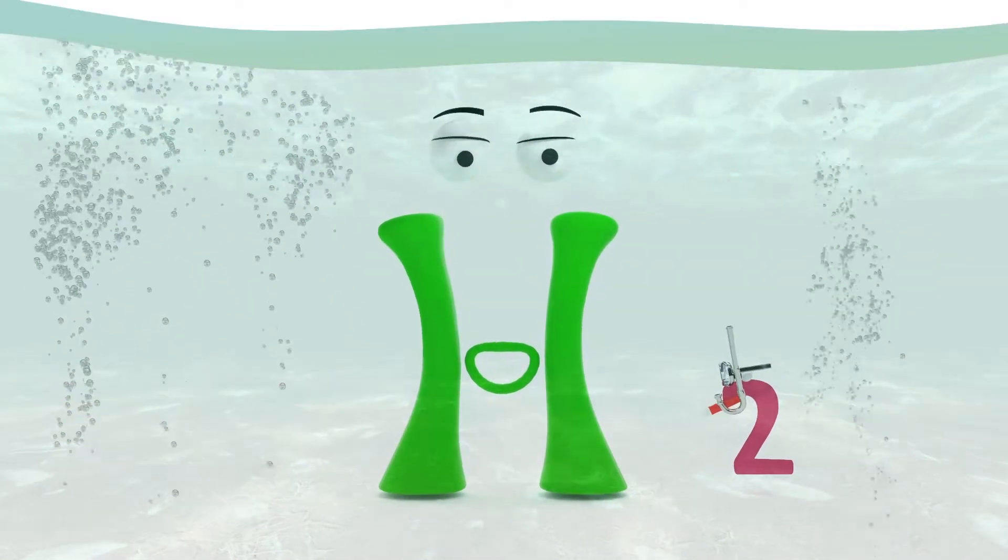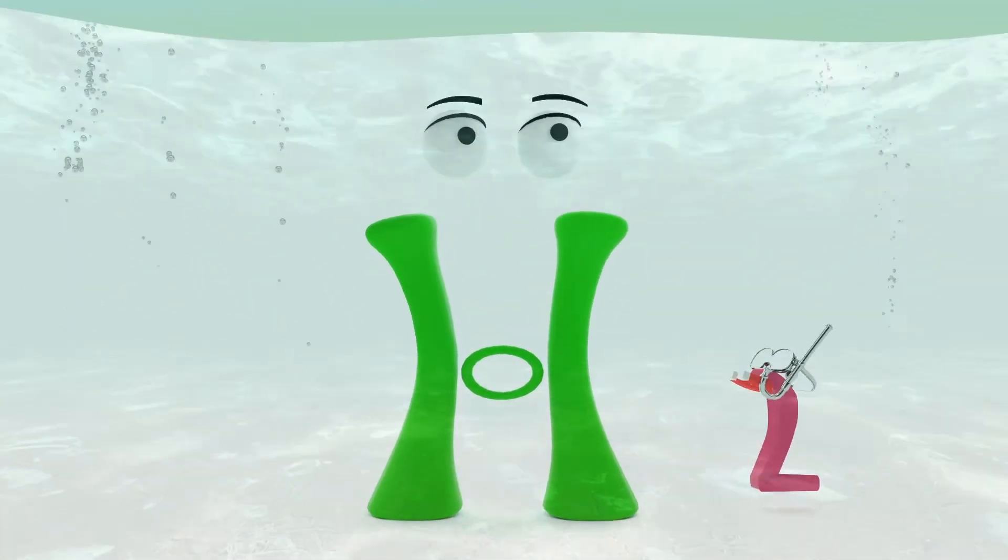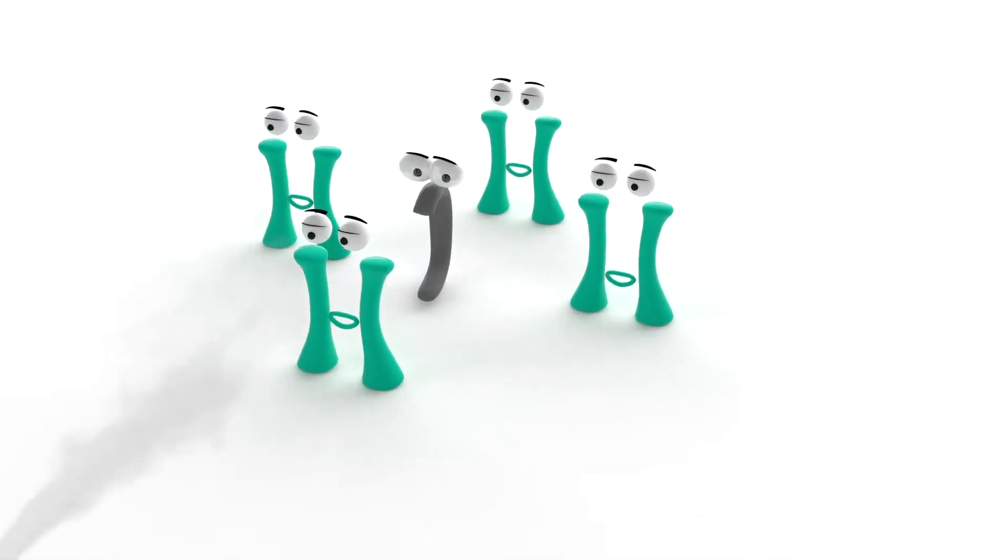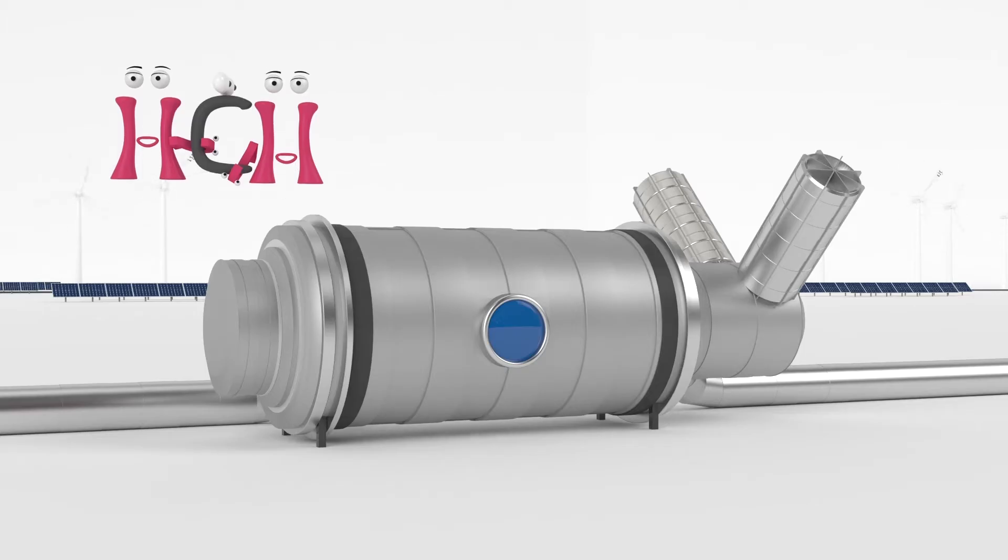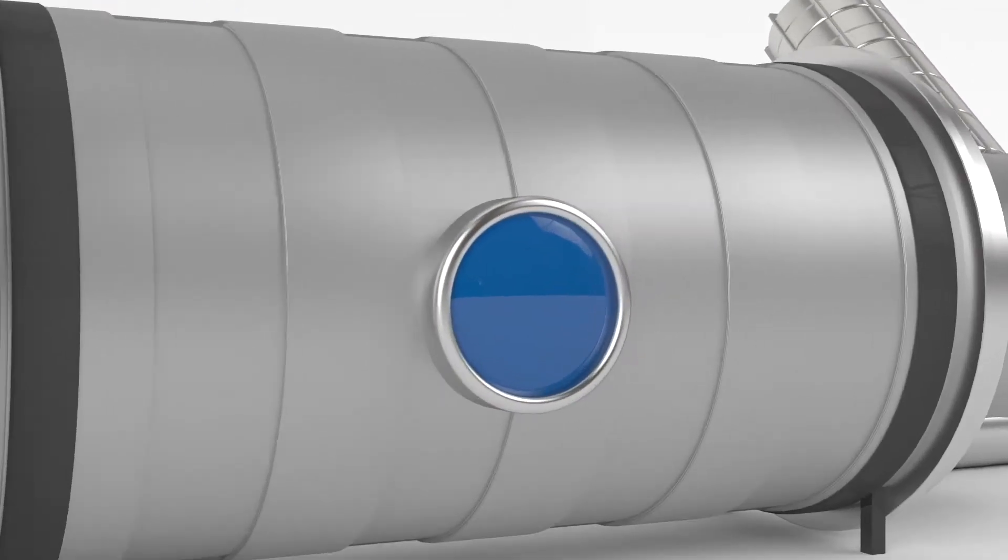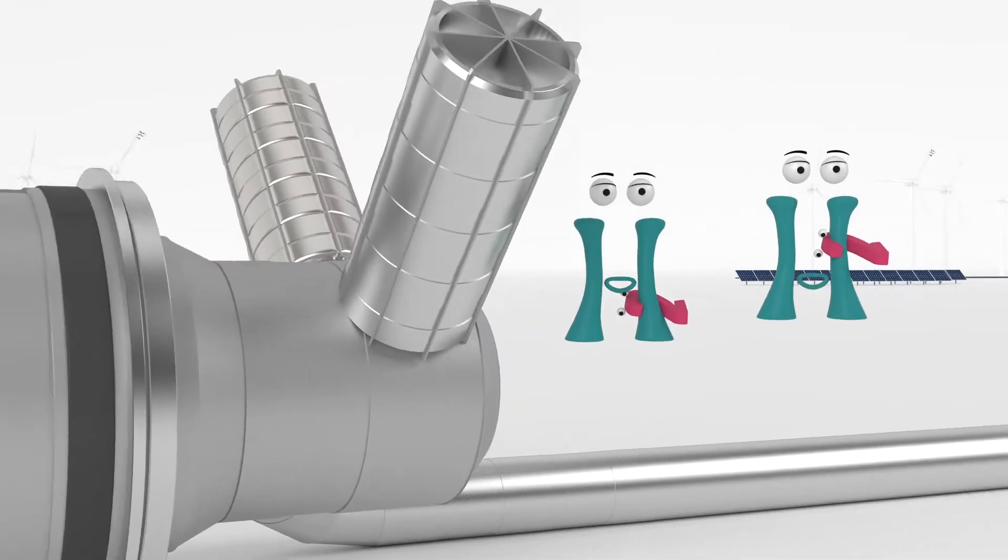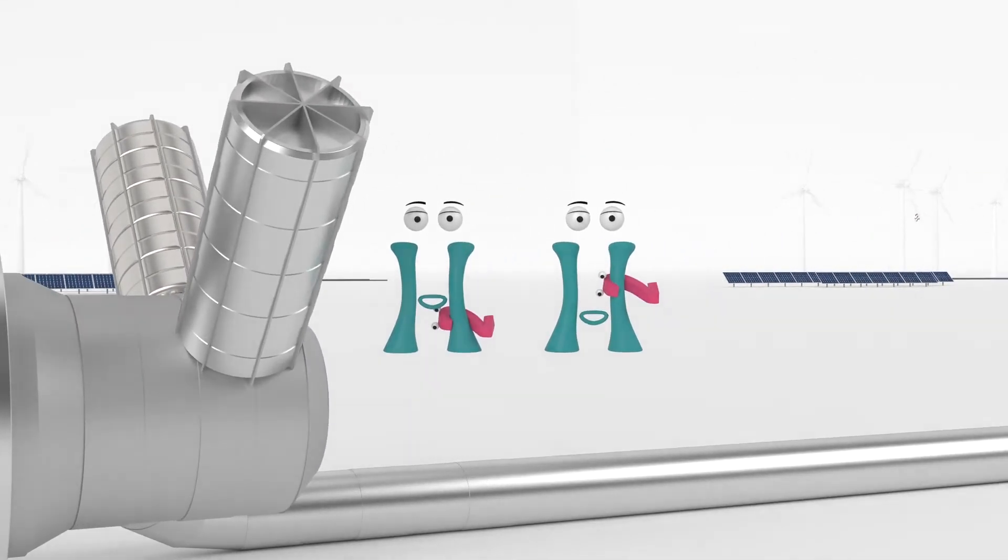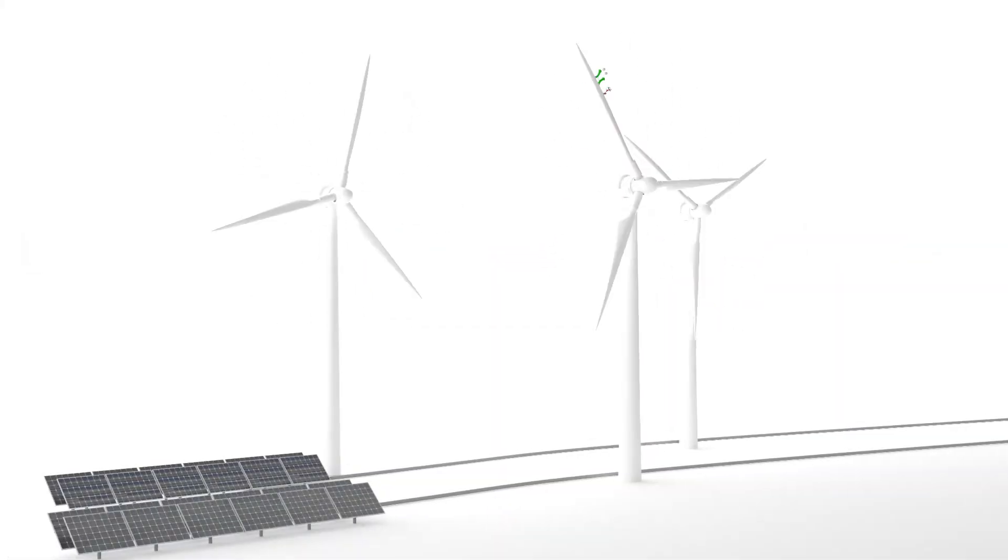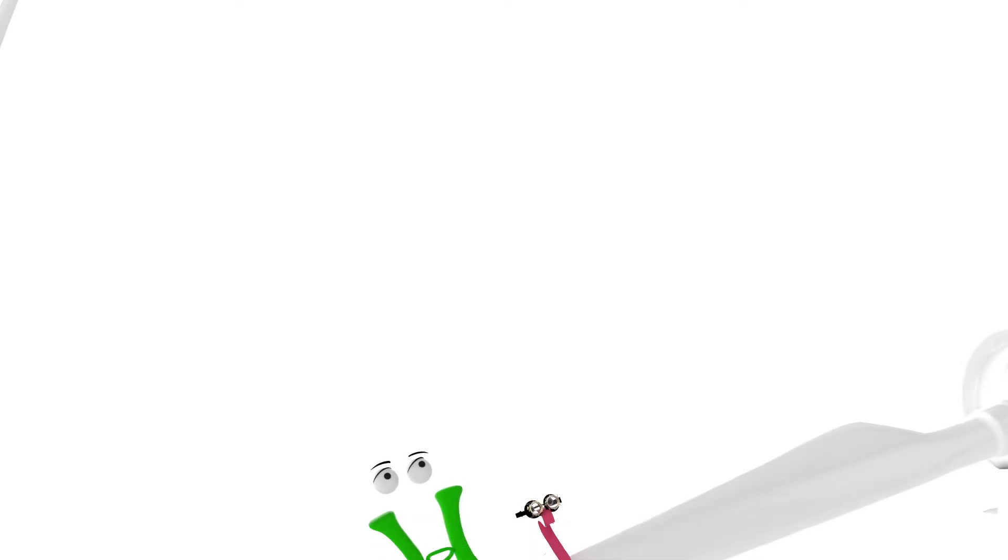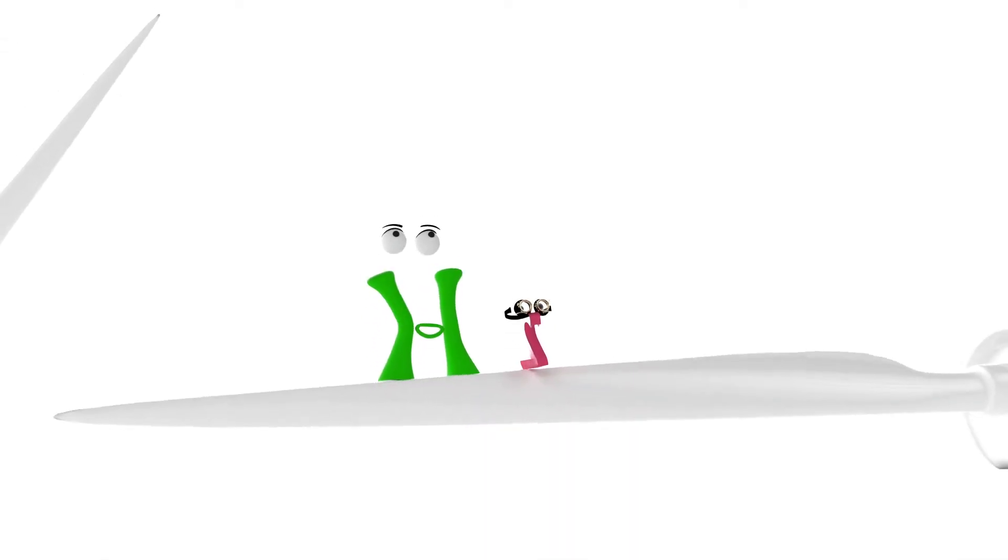I am everywhere, but not alone. If I am made out of natural gas, I turn grey. If CO2 is captured and stored away, I turn blue. Or if generated by pyrolysis from natural gas, I turn turquoise. When I am generated by renewable energy such as wind and sun, I turn all green.